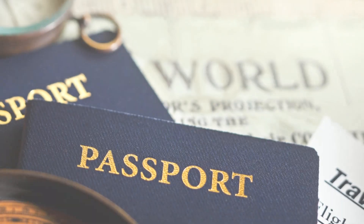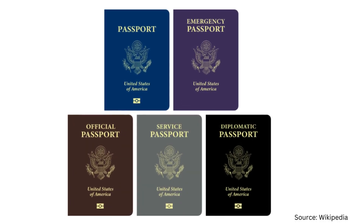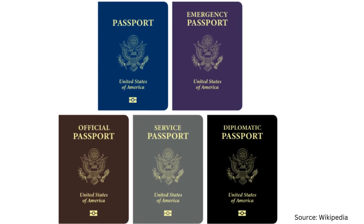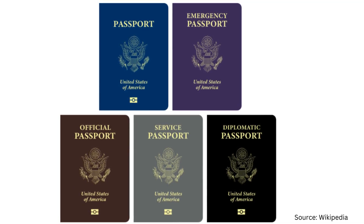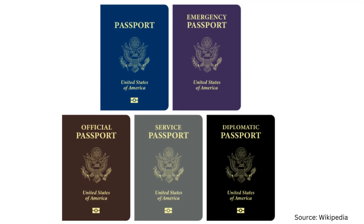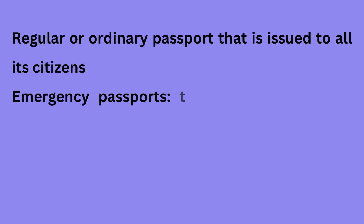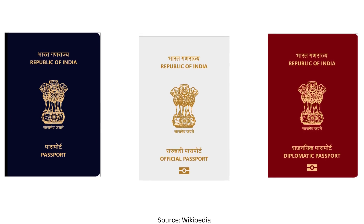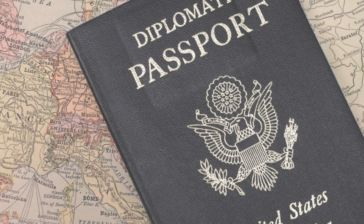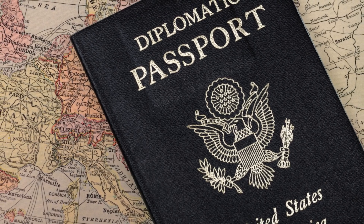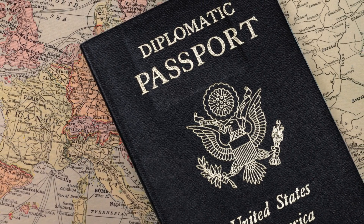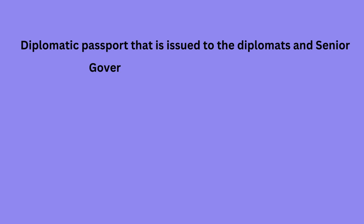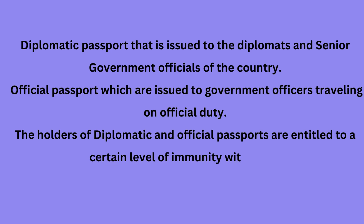Governments issue different kinds of passports. Regular or ordinary passports are issued to all citizens. Emergency passports are issued to individuals who need to travel urgently and have lost or don't have a passport. Diplomatic passports are issued to diplomats and senior government officials. Official passports are issued to government officers who need to travel for official duty. The holders of official and diplomatic passports are also entitled to a certain level of immunity.